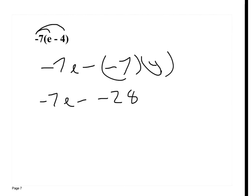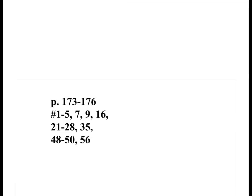We have negative 7 times e minus 4. So I distribute the negative 7 out. Negative 7 times e is negative 7e. I keep the minus sign. I do negative 7 times 4, which is negative 28. I can't have a minus negative, so I make them positive. It's negative 7e plus 28. Here's your homework.